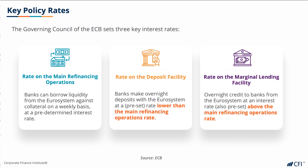The difference between the main refinancing rate and the marginal lending facility is that the main refinancing facility is collateralized, so the bank borrowing needs to pledge an asset. Marginal lending facilities are not collateralized, hence they are more expensive, and they also present a red flag when a bank comes to use this facility.